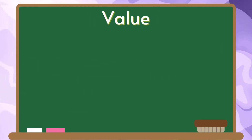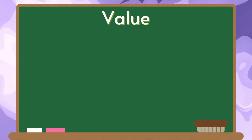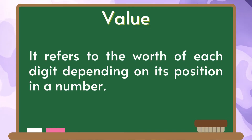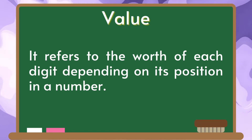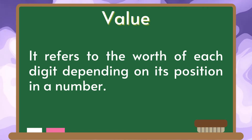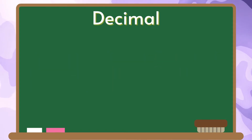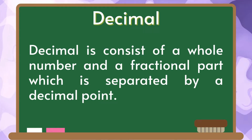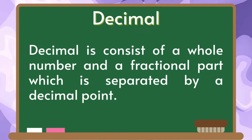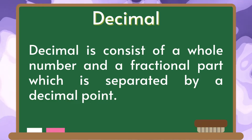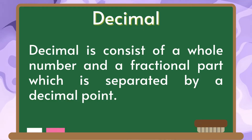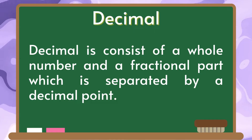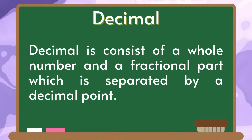Now, what is value? Value refers to the worth of each digit depending on its position in a given number. A decimal consists of a whole number and a fractional part which is separated by a decimal point.